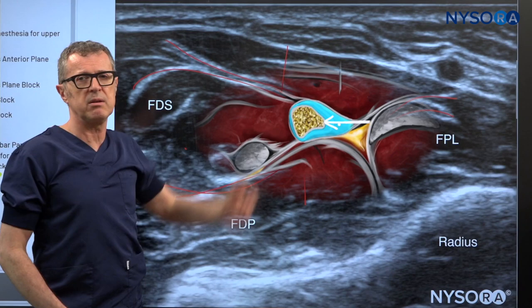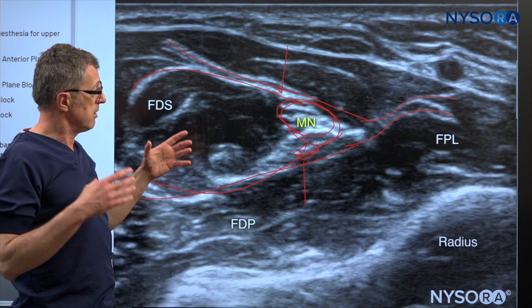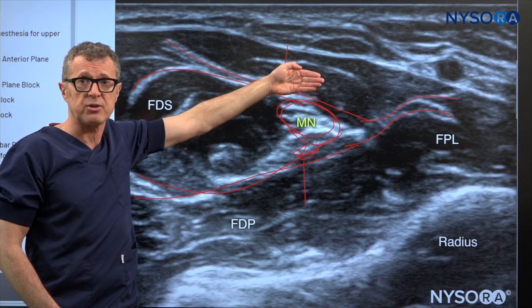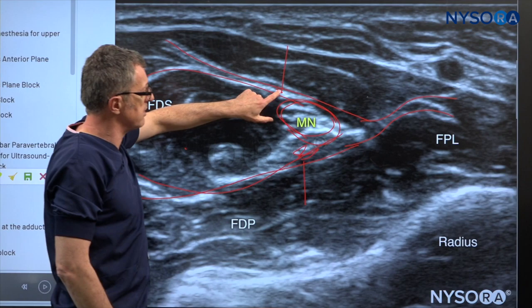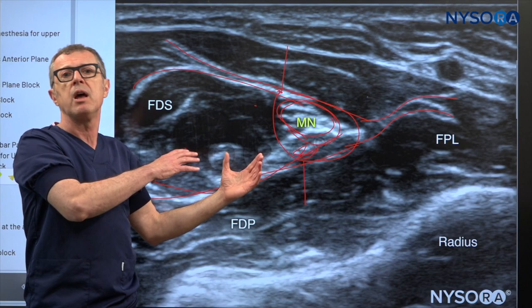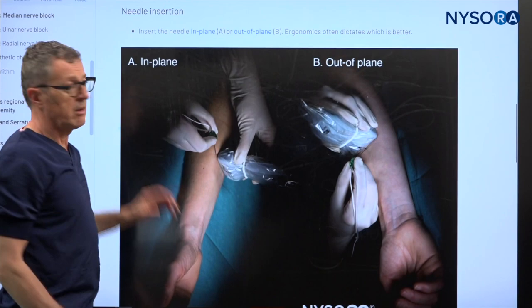This is very important: when you sonogram the median nerve, you need to apply some pressure on your ultrasound probe to get good anatomy. But it is very important to release that pressure at the time when you start injecting. As long as you keep applying pressure on the probe, you will not allow the tissue to breathe, and therefore the local anesthetic cannot distribute around the nerve. Apply pressure for anatomy visualization, and unload the pressure when it's time to inject the local anesthetic.